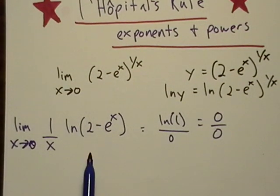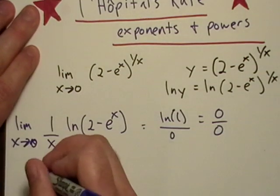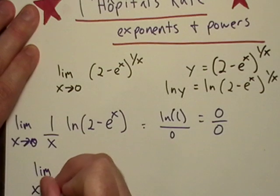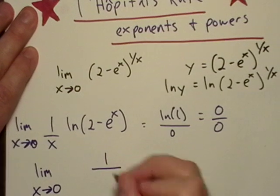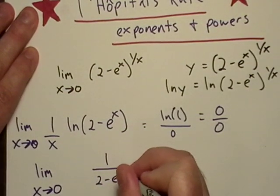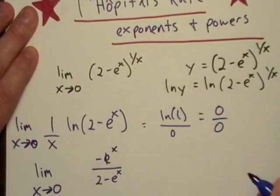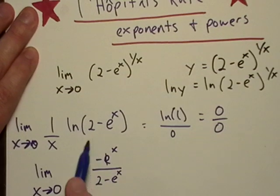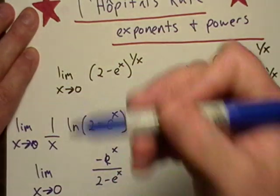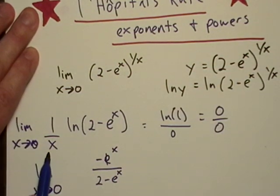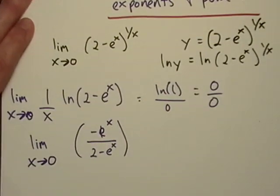So our new limit is one over two minus e to the x and I guess we're going to go like that. I just took the derivative of this, used the chain rule, you know, reciprocal of the inside and then I took the derivative of the inside. Looks like the bottom just goes to one, so I don't really even have to rewrite it. So I've got that right there.